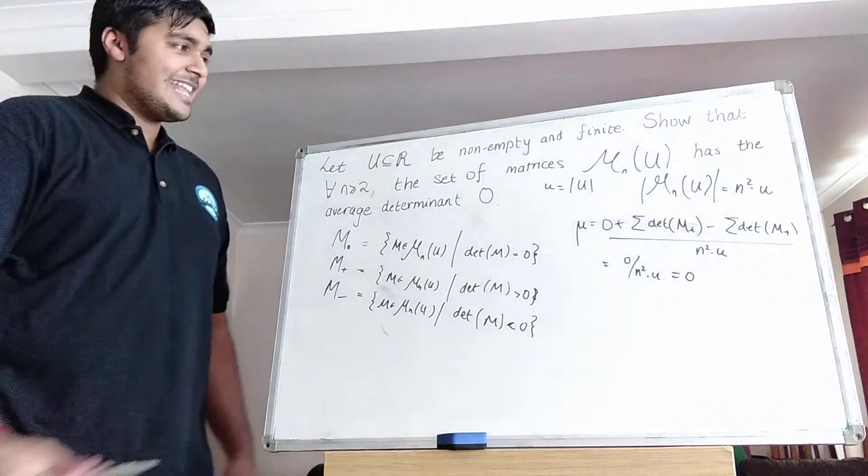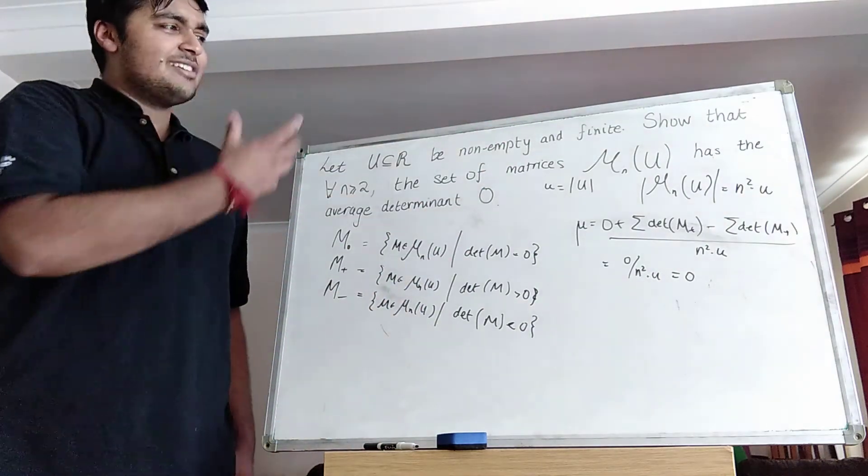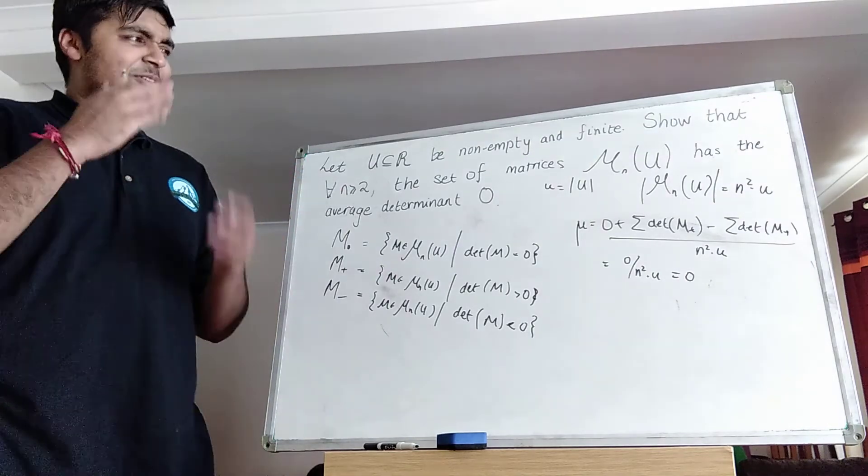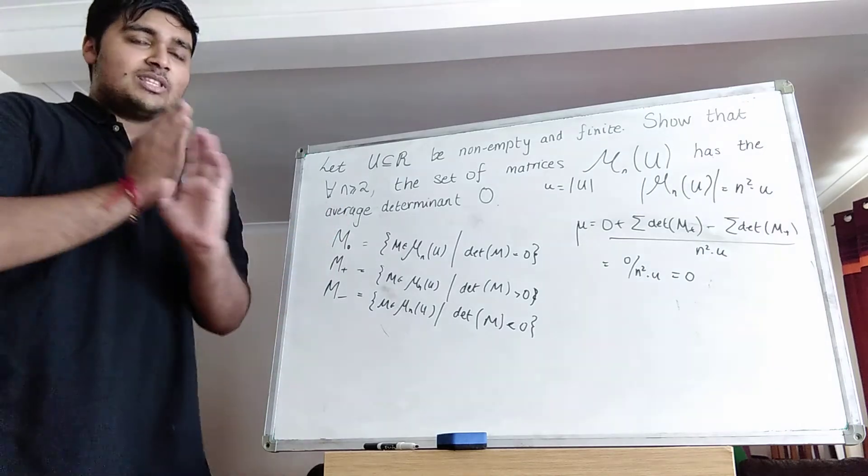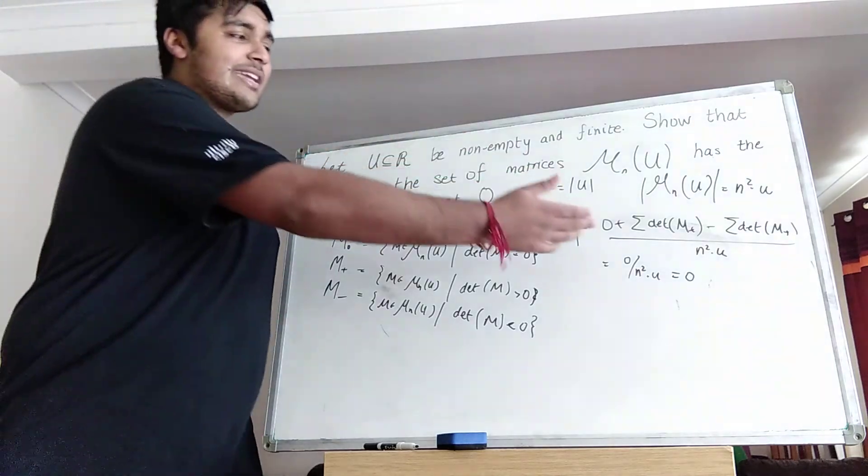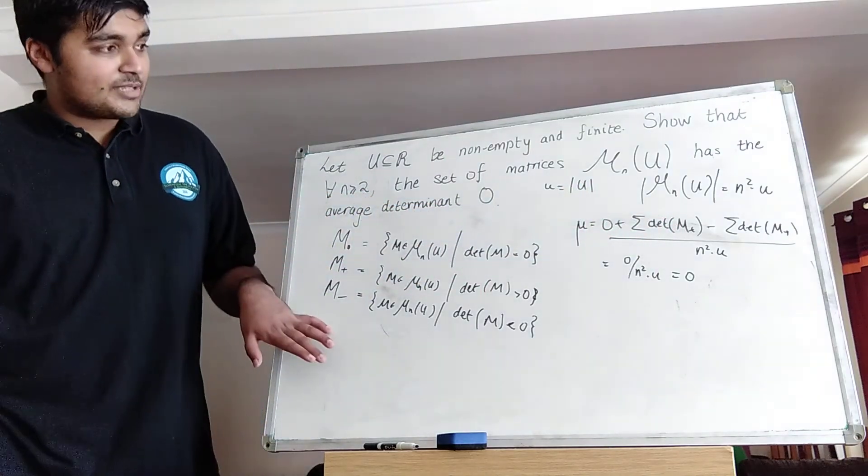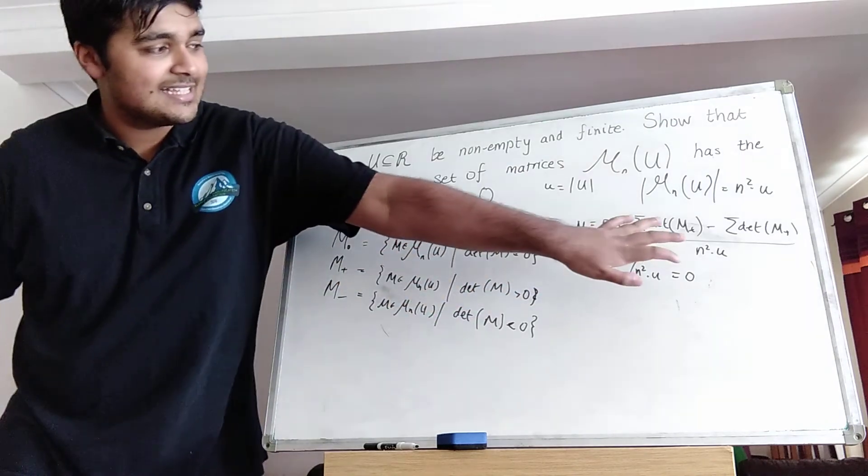Okay so I hope that has made sense. We've taken what seems to be quite a difficult problem and when you first see it you might go ah let me try with n equals two and u is a very small set and try all the different cases. But this very neat trick shows that there's some sort of one to one bi-jection. So you don't actually have to work out the value of this thing here. You just know that the corresponding set M_minus is going to have the sum, the sum of its determinants the negative of this thing here.